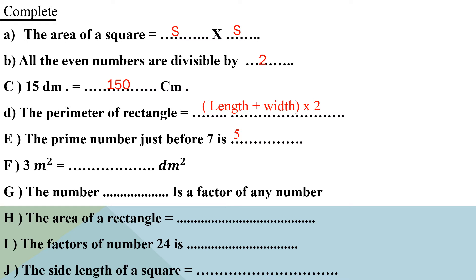Letter F: 3 metres squared equals how many decimetres squared? These are units of area. From big units to small units, we multiply. From metres squared to decimetres squared, multiply by 100. So 3 × 100 = 300 decimetres squared.